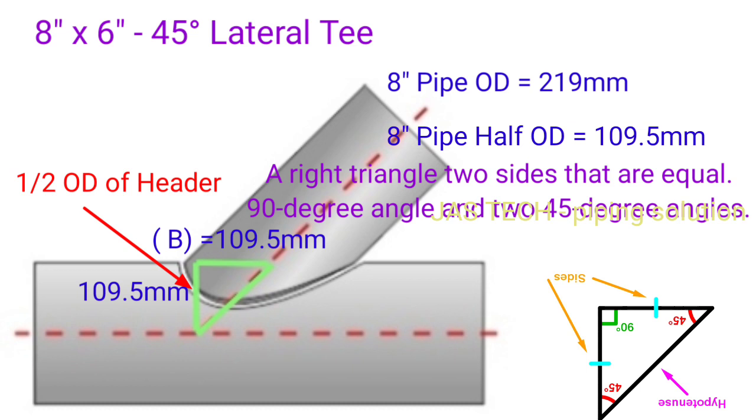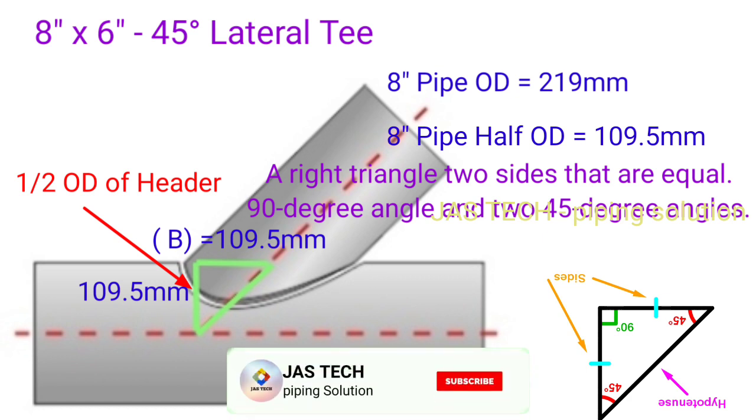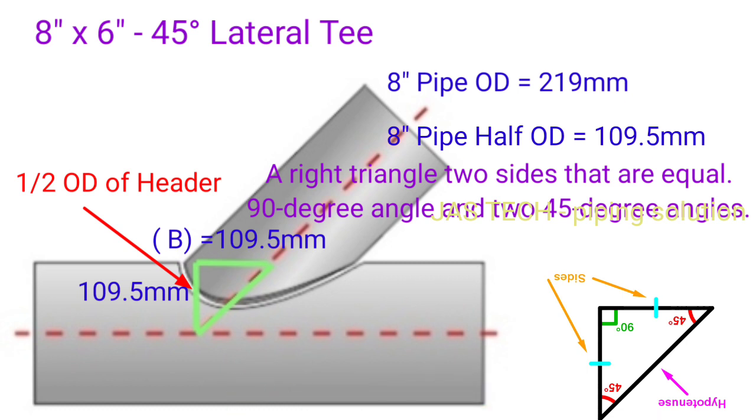For lateral back point calculation, first we find out the B length. 8 inch pipe OD is 219mm. 8 inch pipe half OD, we know, is 219 divided by 2, which equals 109.5mm. In common rule, a right triangle has two sides that are equal.